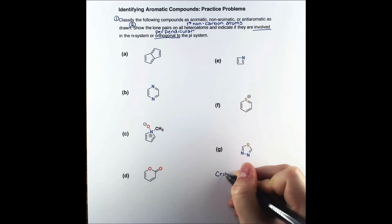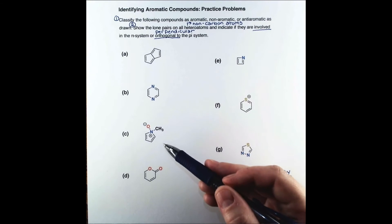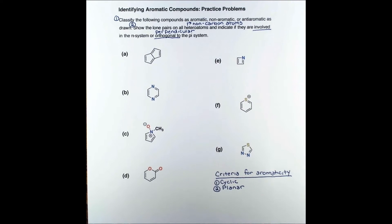As a refresher, let's review the criteria for aromaticity. The compound must be cyclic and planar. In our examples, we have relatively small rings containing double bonds, so planarity is probably not a major concern in our problems, but it can be with larger rings.